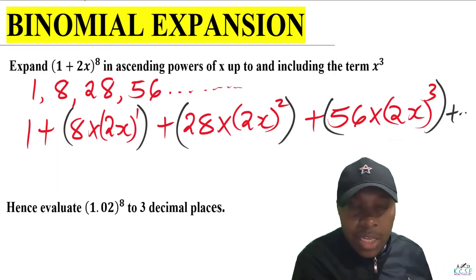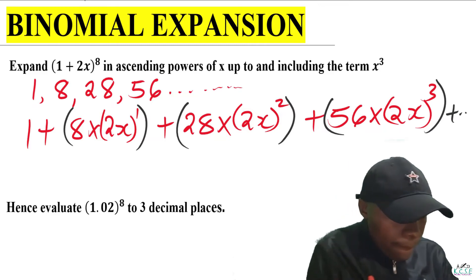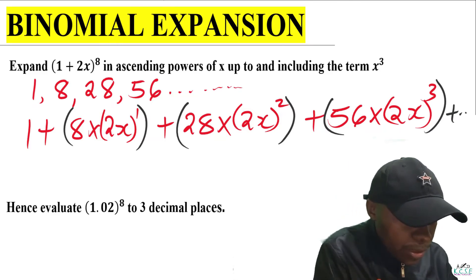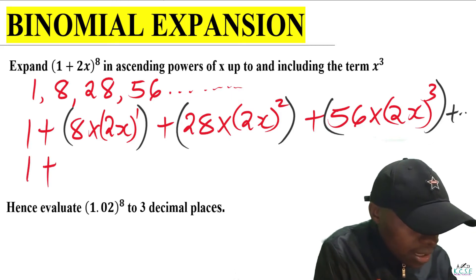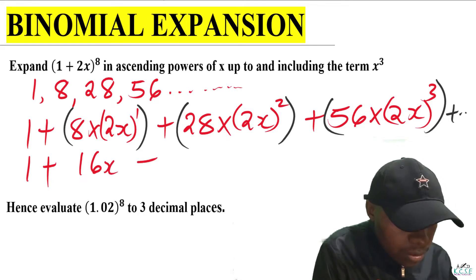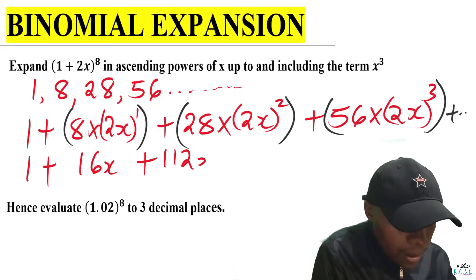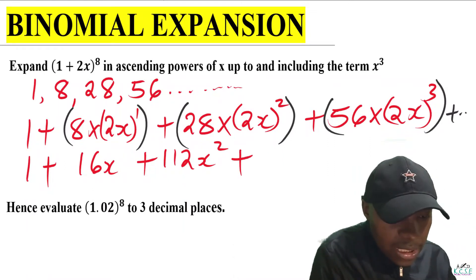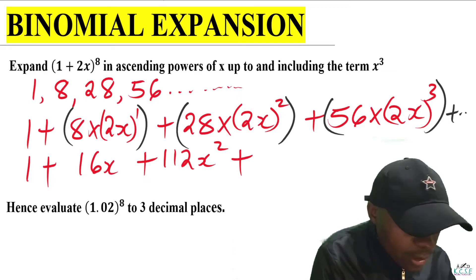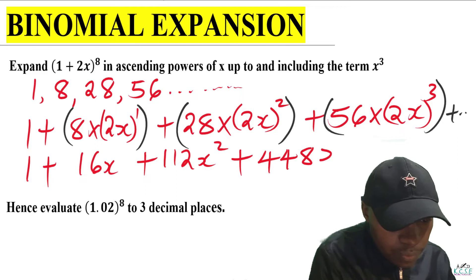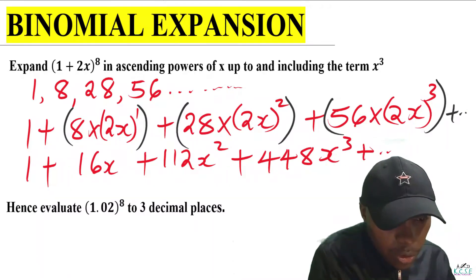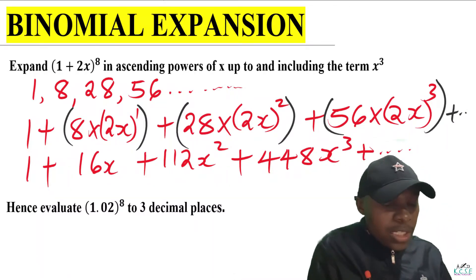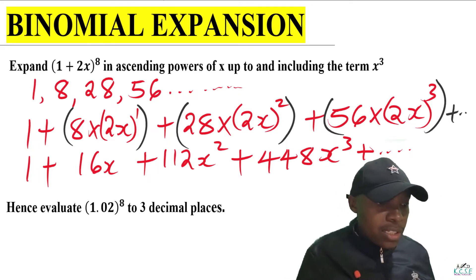This is the term that gives us x cubed. Let us simplify. When you simplify, this is what we get: 1 plus 16x, then 28 times 4 gives 112x squared, then 56 times 8 gives 448x cubed, and so on. This is the required expansion with powers ascending up to the term in x cubed.